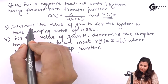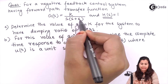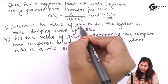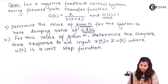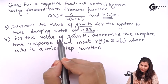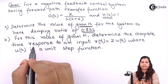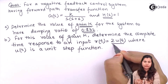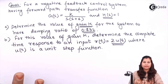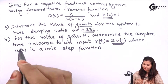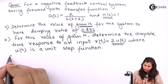We have to determine the value of the gain k, where the transfer function is k upon s(s+6). We need to find the value of gain k for the system to have a damping ratio of 0.832. In the second part, for this value of k, we have to determine the complete time response for input 2u(t), where u(t) is the unit step function.